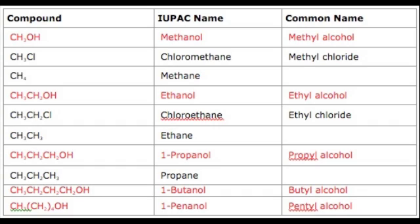Alcohols with 4 to 10 carbon atoms are oily and have deeper, fruity odors at room temperature. Alcohols with 12 or more carbon atoms are solids at room temperature. The boiling points of alcohols are much higher than those of regular alkanes. Methanol, ethanol, n-propyl alcohol, isopropyl alcohol, and t-butyl alcohol are miscible with water, because water molecules contain hydroxyl groups that can form hydrogen bonds with other water molecules and alcohol molecules.